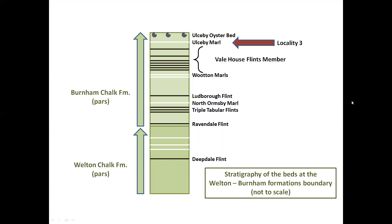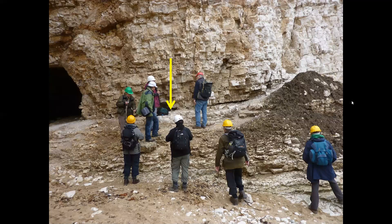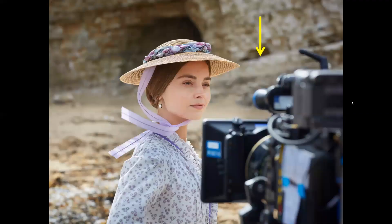The features left by erosion of the Ulspie Marl at North Landing are so conspicuous that for some they question the credibility of a recent TV series. Note the small wave-cut notch indicated by the arrow, which appears in a scene featuring a young Queen Victoria, played by Jenna Coleman. In the story, however, Victoria was supposed to be on a beach close to her residence, Osborne House, on the Isle of Wight.